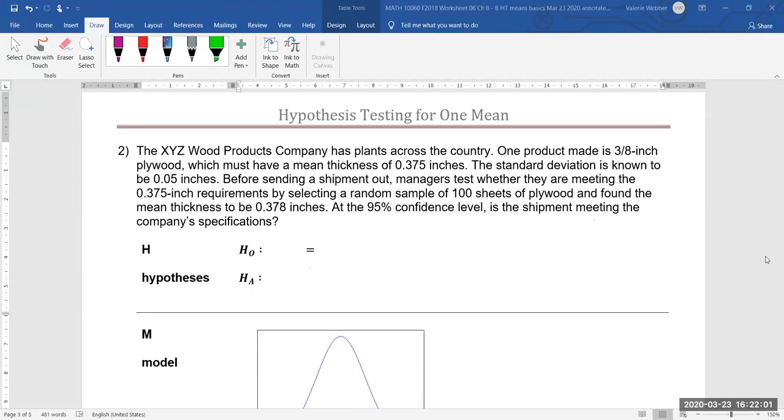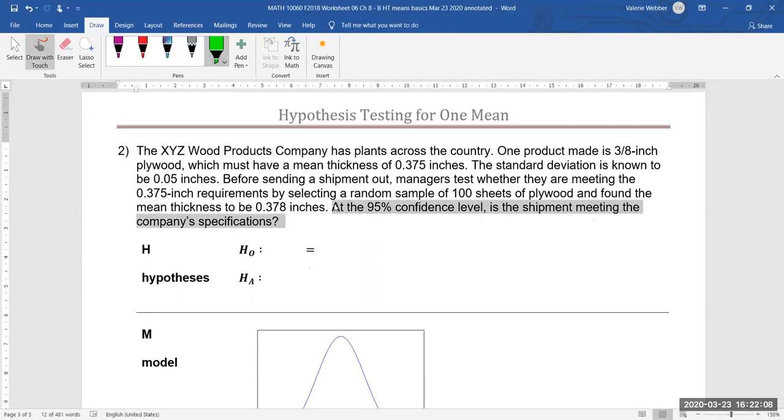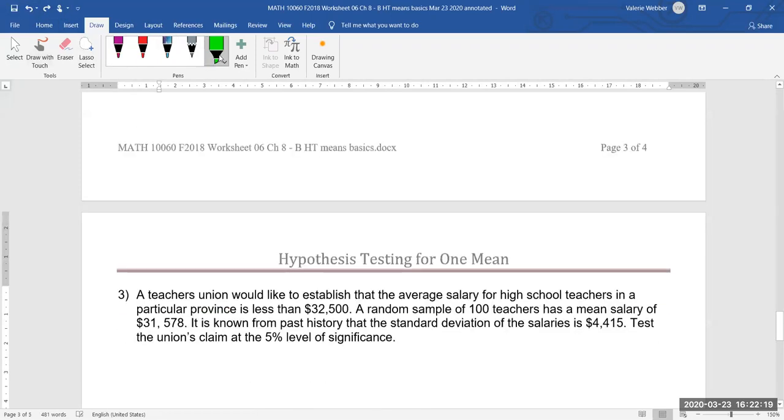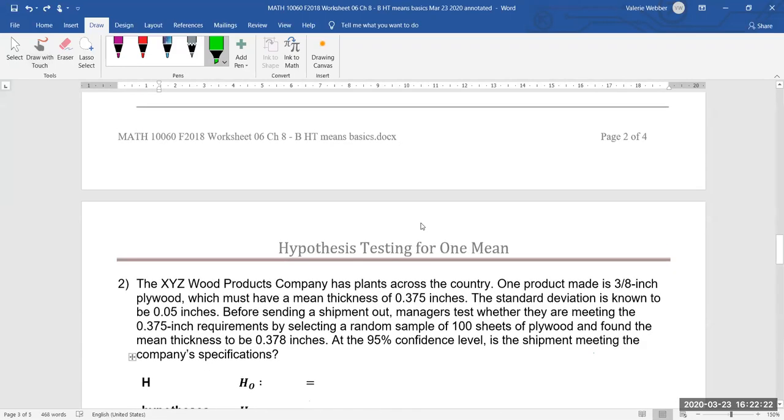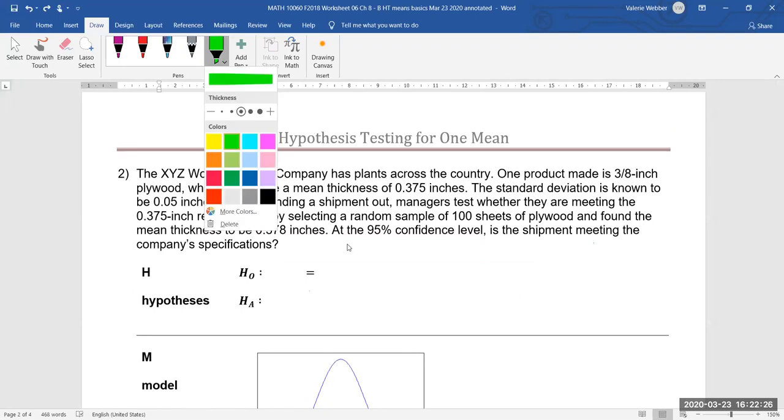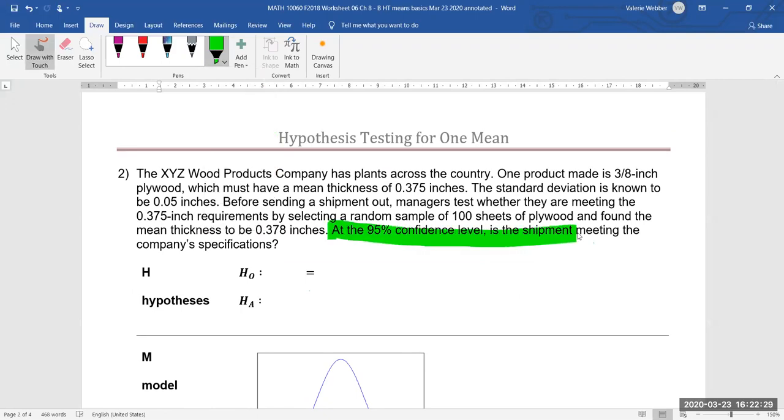So once again, how do we know that this is actually a hypothesis test? Well, here we're being asked at the 95% confidence level whether the shipment is meeting the company specifications. So that's basically telling us that this is a hypothesis testing question. We know that the product must have a mean thickness of 0.375 inches. So just like last time, what we need to remember here is that we do have some population information.